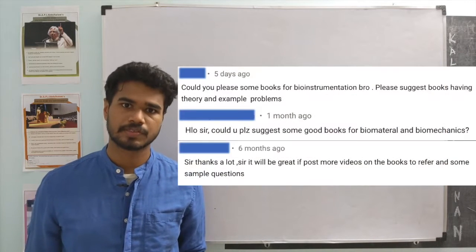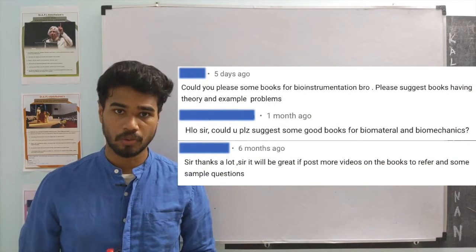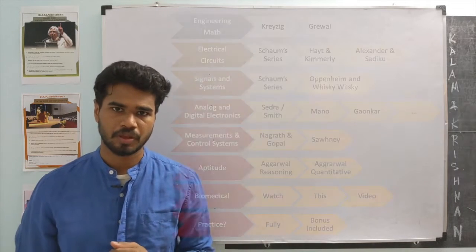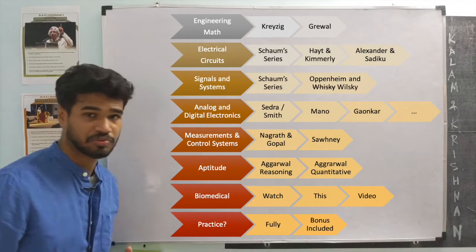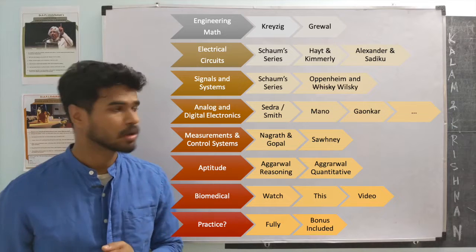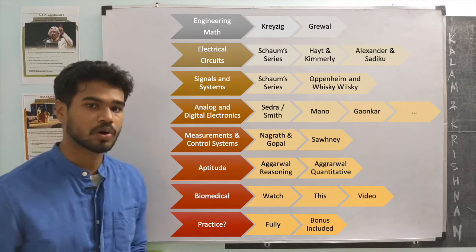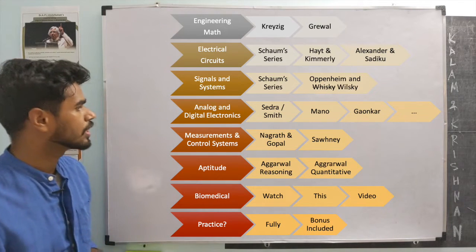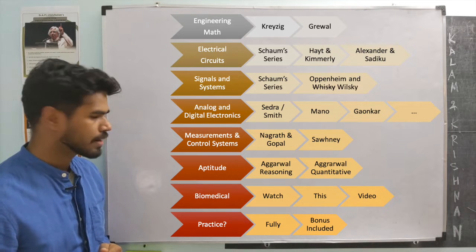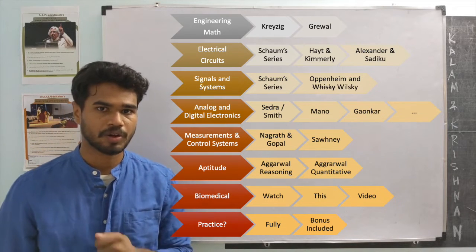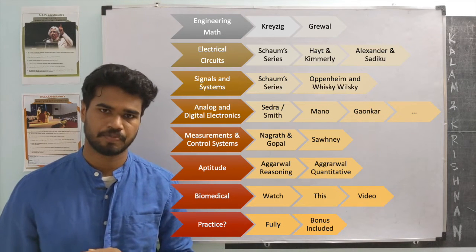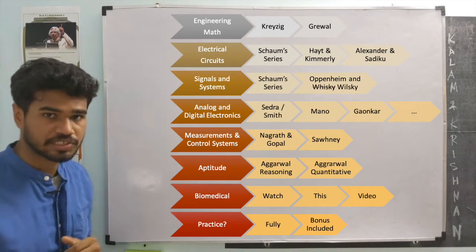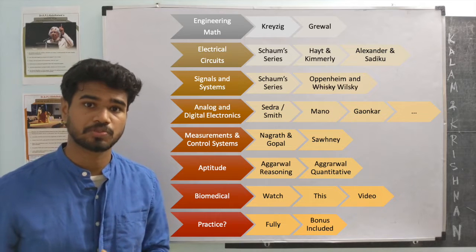One of the questions I get most often is: what are the books most useful for preparation of the GATE Biomedical Engineering examination? What I have shown here is a partial list of topics from the GATE BME exam. Although the standard books for all these topics are well known because they align with other engineering branches, most topics here are not important for GATE BME, as the paper is primarily focused on the biomedical section and the standard references for that are not well known.